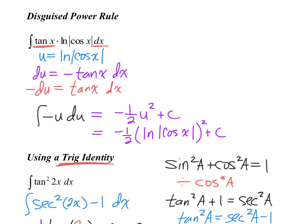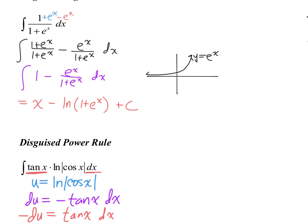A student asks about the disguised log rule — specifically how e to the x over one plus e to the x becomes the natural log. The key rule is: the derivative of the natural log of u is u prime over u. So reversing that, the anti-derivative of u prime over u du is the natural log of u plus C. That's the log rule in action.